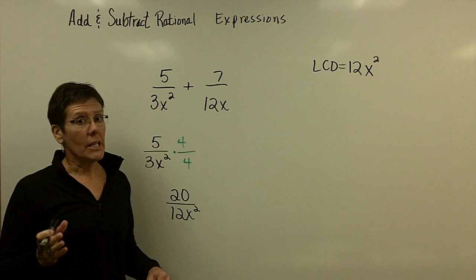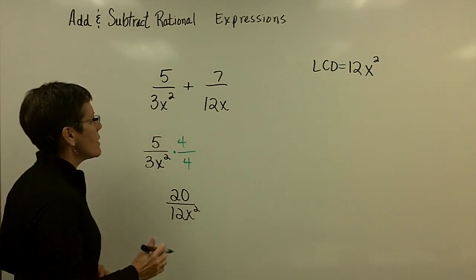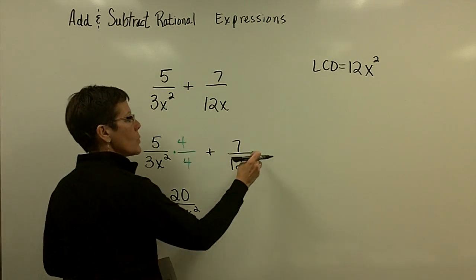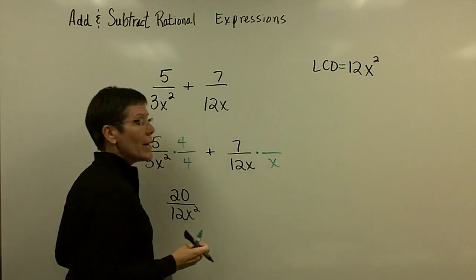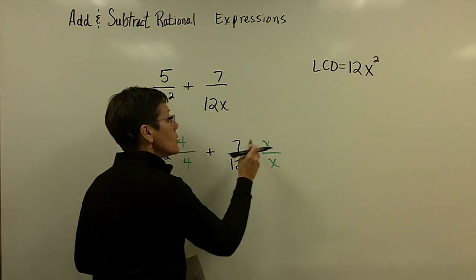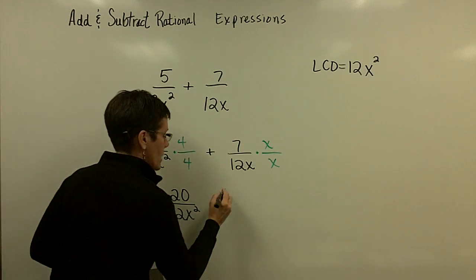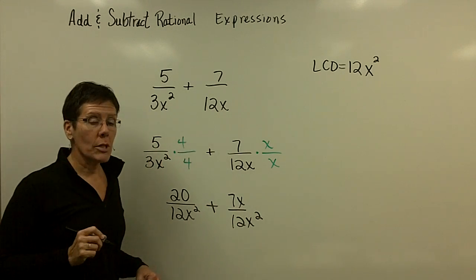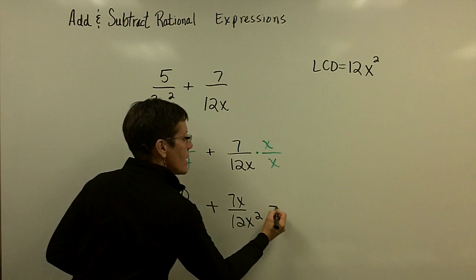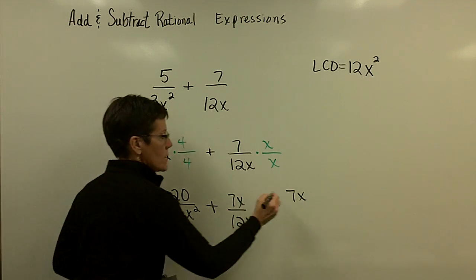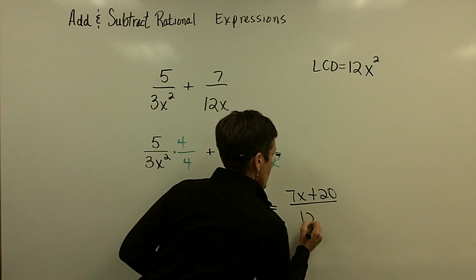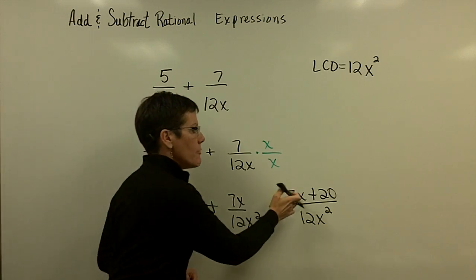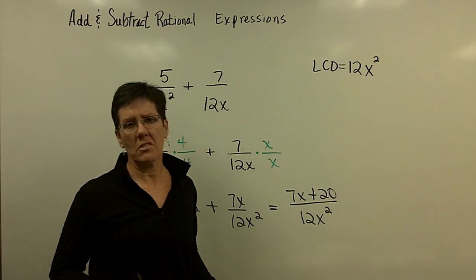Then 7 over 12x: its denominator needs to become 12x². So I multiply that denominator by x, and therefore the numerator by x as well. That gives 7x over 12x². Now I'm ready to add. The numerators are not like terms, so I put them side by side: 7x + 20 over the common denominator of 12x². I pause and ask myself: can I reduce that at all? No. So I'm done.